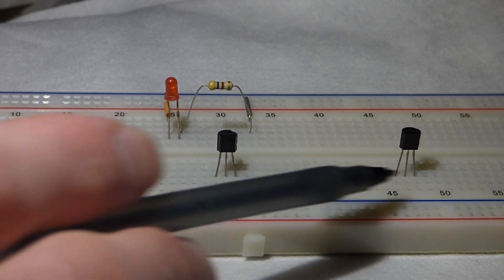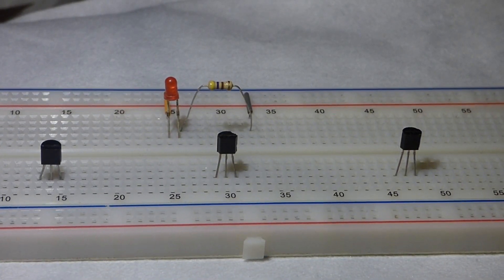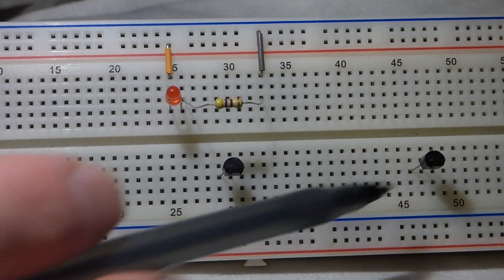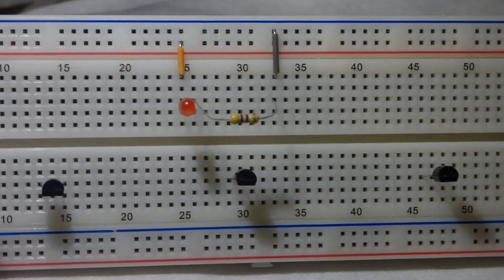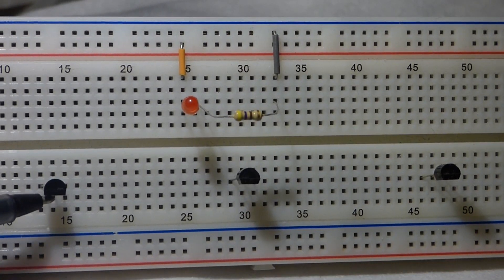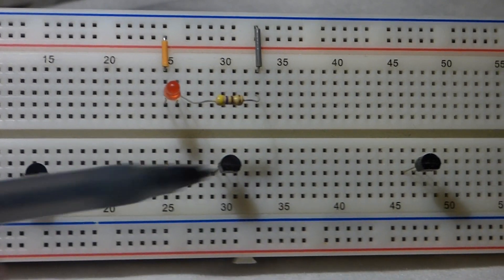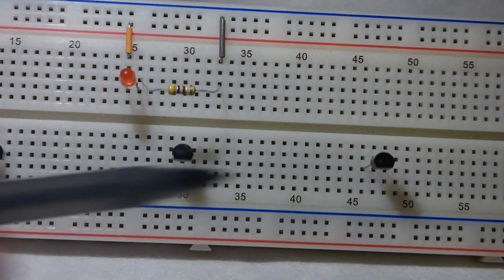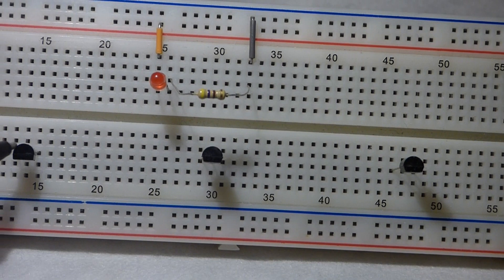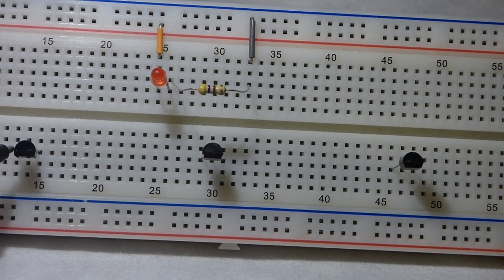To begin with, we're going to be using transistors that look like this. This is called the TO92 package. That's just what it looks like. I can't tell if you can really see, but there's a flat edge on one side. This has writing on it, the flat edge. And then the rest of the transistor is rounded.